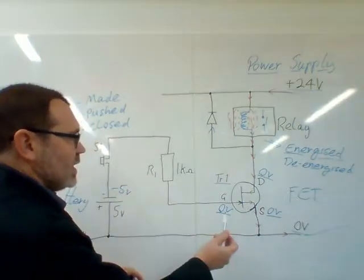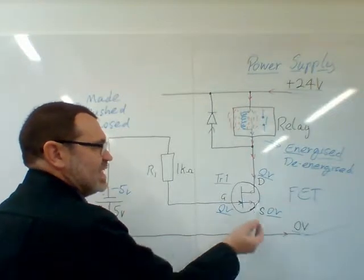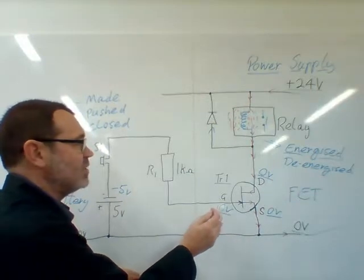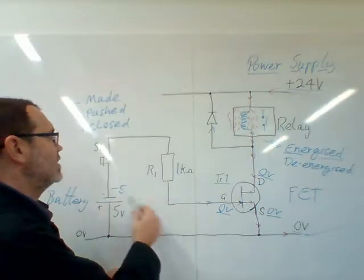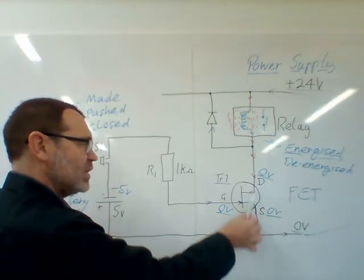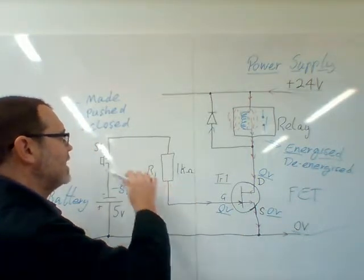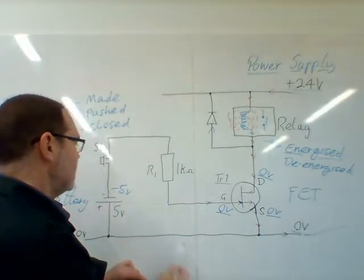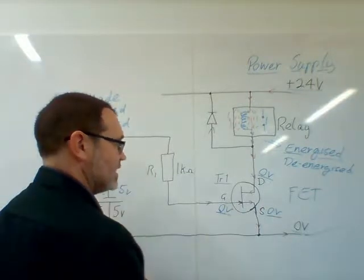Following through the switch we come to resistor R1. FETs, unlike bipolar junction transistors, don't really take any current. They're pressure or voltage operated devices rather than current. There's not really going to be any current flowing down here, but we never like a situation where you could have unlimited current. So in case something goes wrong with the transistor, we put R1 in. It's just a 1k resistor that'll limit the amount of current that could flow.